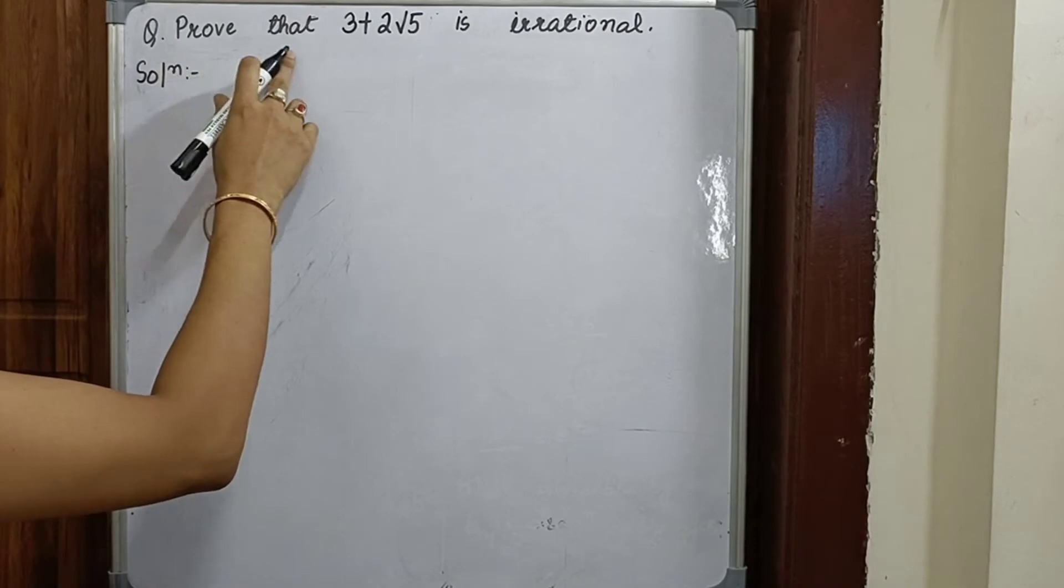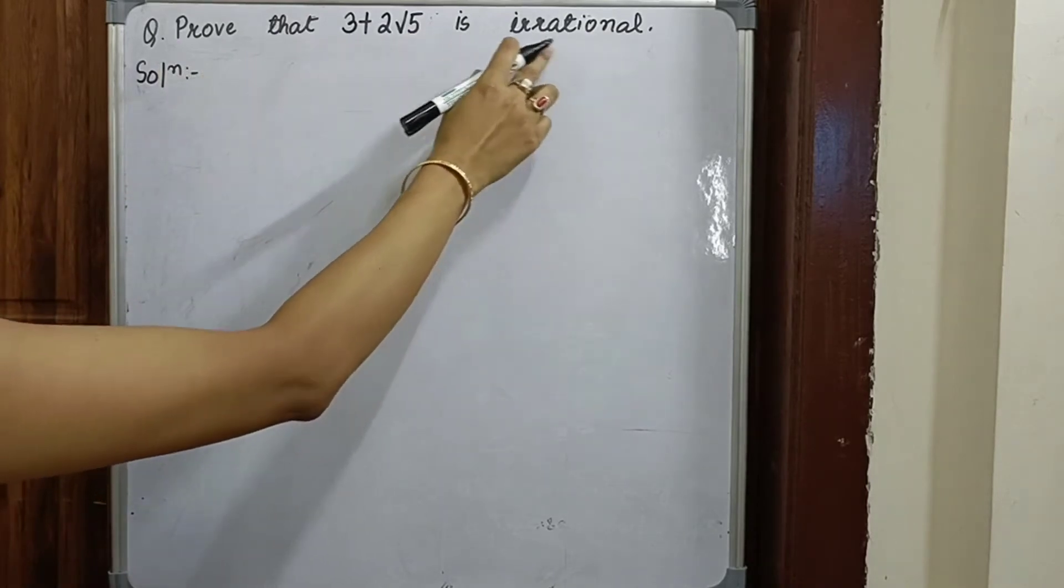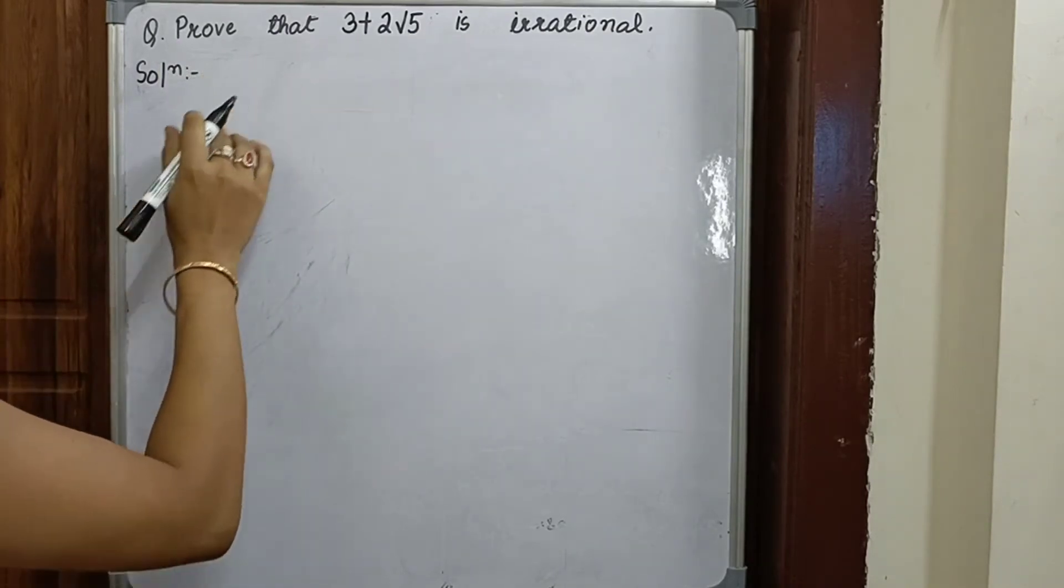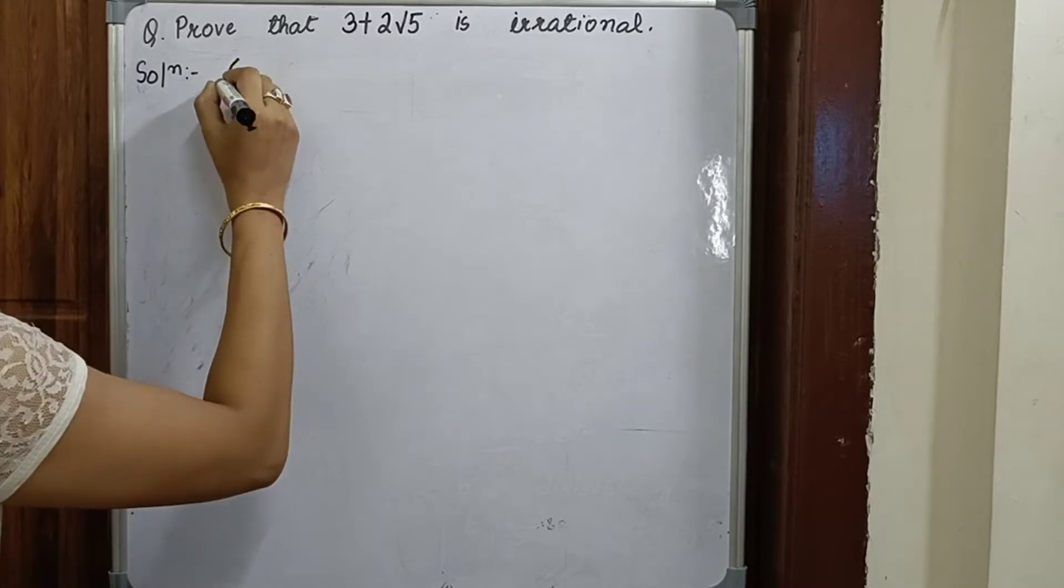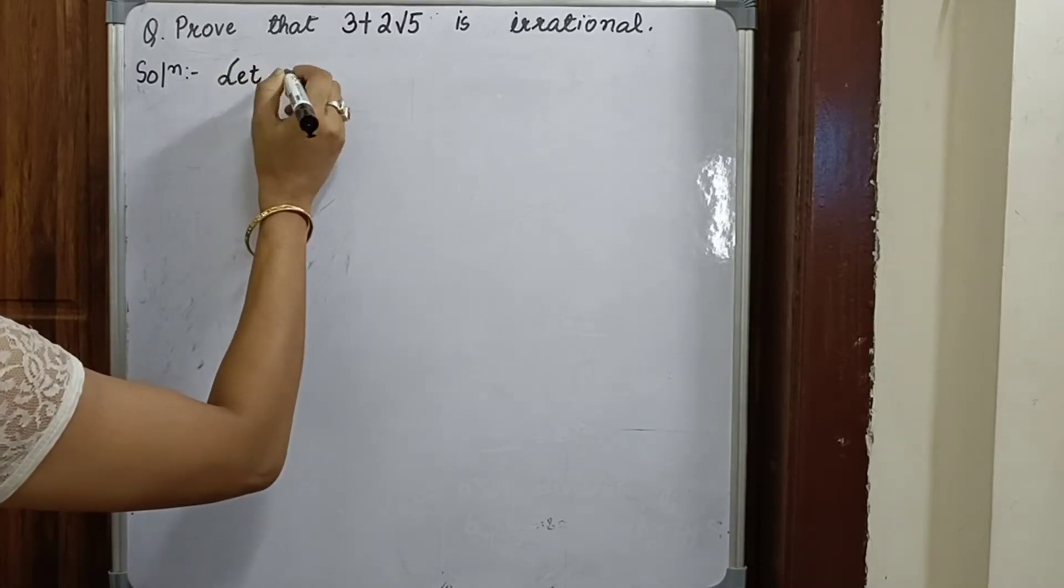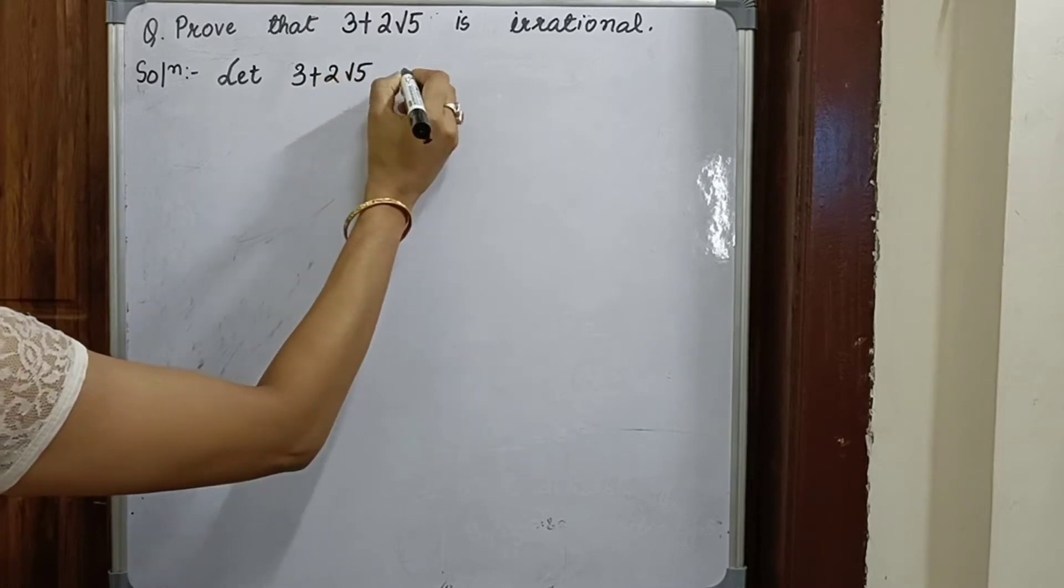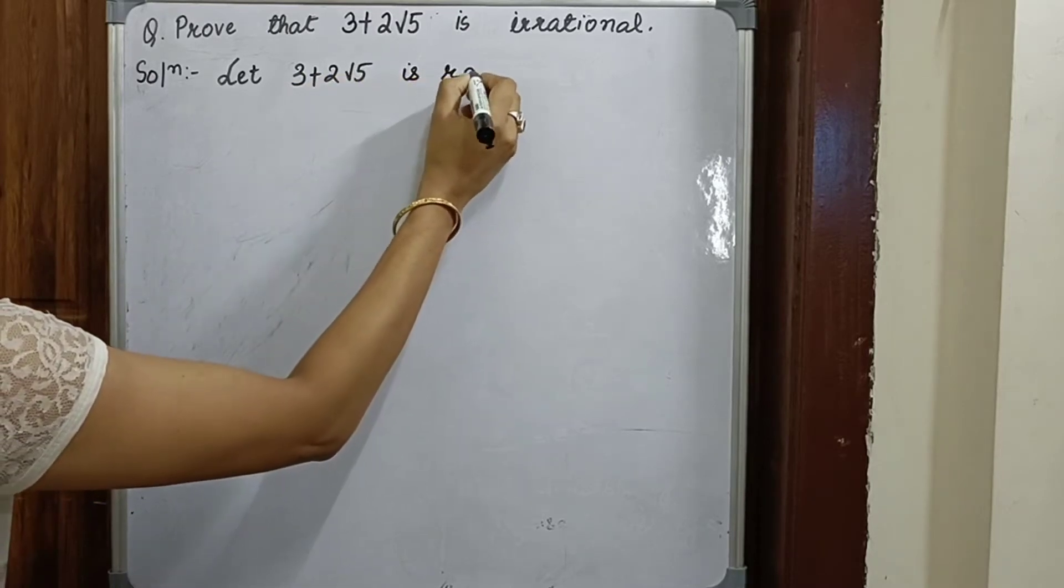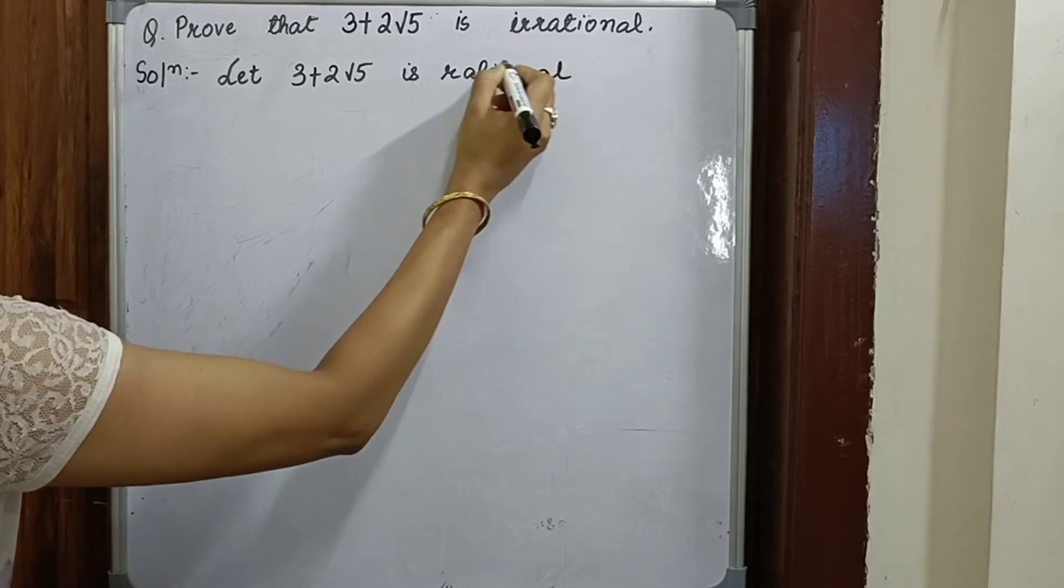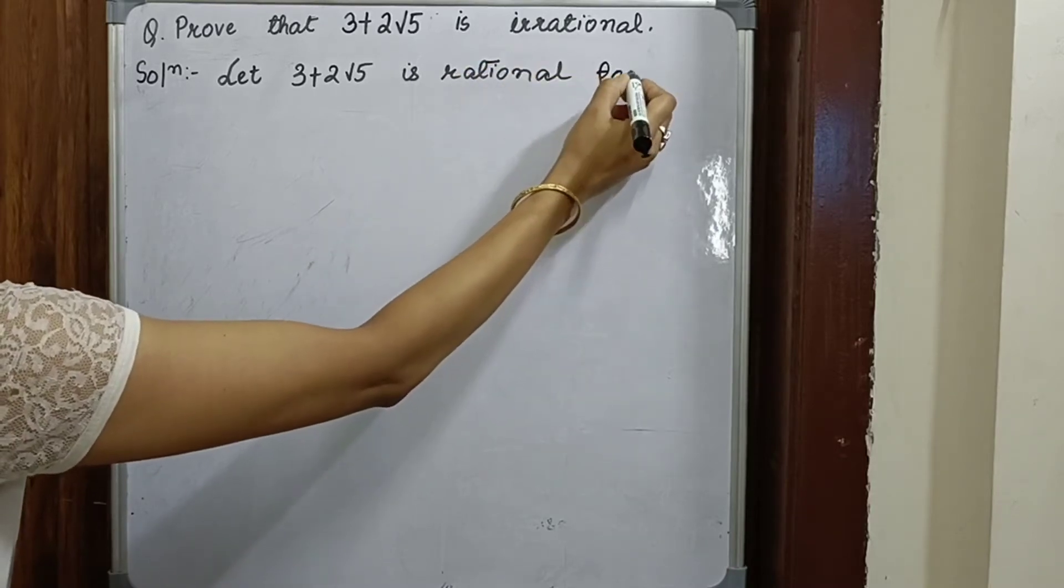Today our question is to prove that 3 plus 2 root 5 is irrational. So first, let us assume that it is rational. Let 3 plus 2 root 5 be rational for two integers a and b.